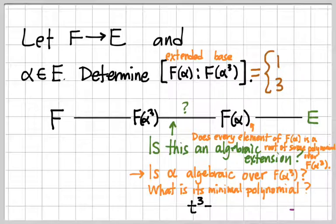So what is its minimal polynomial over f adjoin alpha cubed? T cubed minus... How about this? T cubed minus alpha cubed.